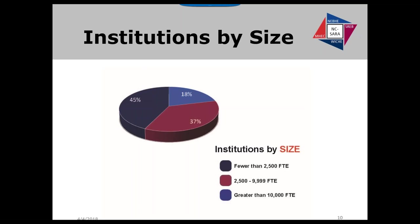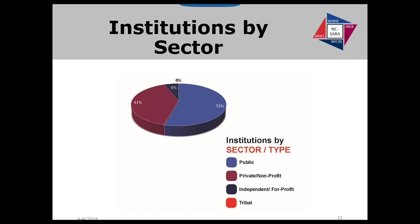The distribution of size of institutions participating has remained fairly constant. The greatest number — 45% — are institutions with smaller than 2,500 student FTE. The next group has an FTE between 2,500 and 9,999. Institutional sector makeup has also remained consistent, with the largest number of participating institutions being public institutions, then private not-for-profit institutions. There is one tribal institution participating in the WICHE region.